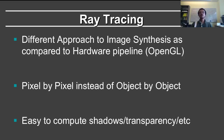Ray tracing is a different approach to image synthesis compared to the standard rasterization pipeline in OpenGL. We go pixel by pixel instead of object by object. If you think about what a rasterizer does, it takes each object, determines which pixels on the screen that object corresponds to, and then acts accordingly. A ray tracer goes pixel by pixel — for each pixel it finds the closest object and shades it appropriately. One of the advantages of ray tracing is that it is easy to compute things like shadows and transparency, which are very difficult to do in OpenGL.